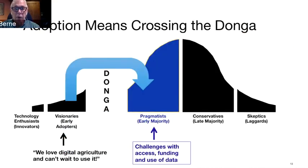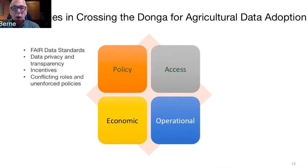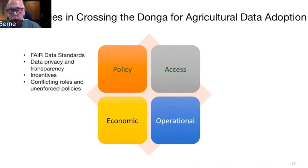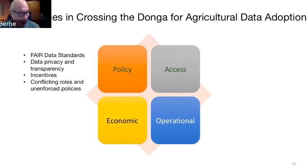We've got to cross this donga, and there are other challenges specific to smallholder farmers with access, funding, and use of data. We can divide this into four areas. On the policy side, Stefan in webinar two talked about the FAIR data standards — making sure there's a policy in place so you can find the data, access it, and that it respects your privacy and transparency. The policies around incentives for people using data are really mixed and unclear, with conflicting roles and unenforced policies. That's clearly a challenge area, largely outside your control as a farmer, but still needs to be addressed.